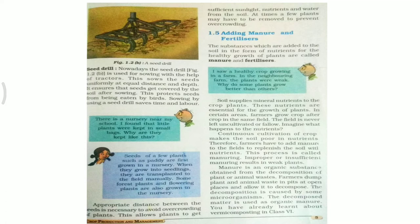Why do some crops grow better than others? What do plants need? The soil must be good. Nutrients are essential for the growth of plants. If all plants are to grow better than others, nutrients in the soil are key.